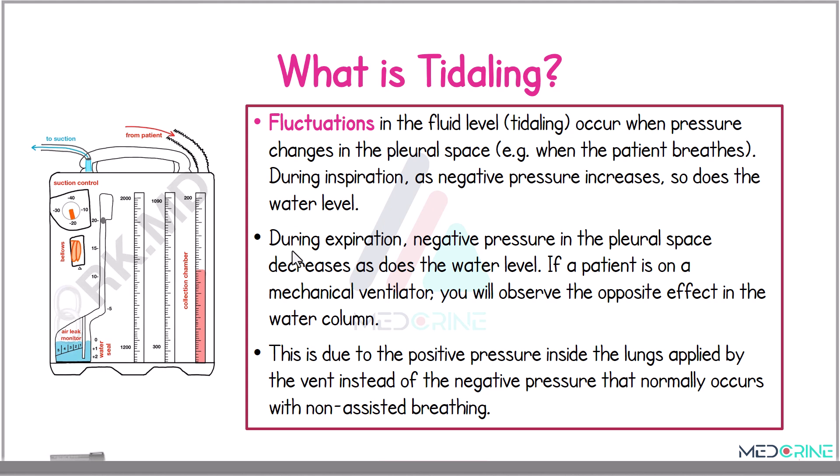Tidaling, or fluctuation in the fluid level, occurs with pressure changes in the pleural cavity. For example, when a patient breathes in and out, during inspiration the negative pressure increases and so does the water level. During expiration, negative pressure in the pleural space decreases and the water level decreases as well. If a patient is on a mechanical ventilator, you will observe the opposite effect in the water column. This is due to the positive pressure inside the lungs applied by the ventilator, instead of the negative pressure that normally occurs with non-assisted breathing.